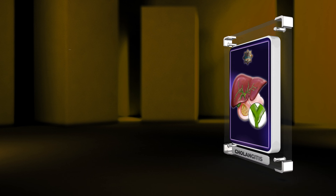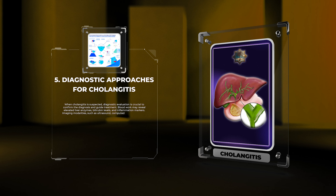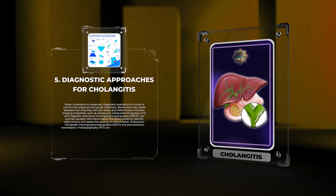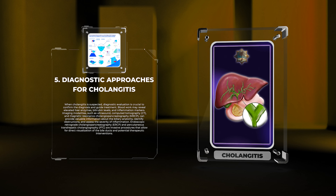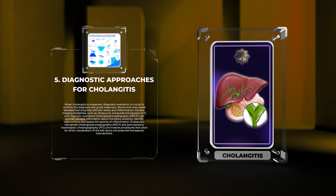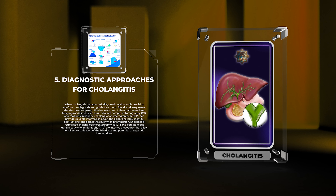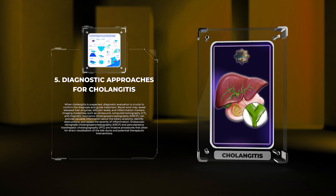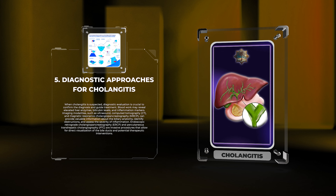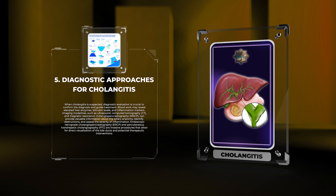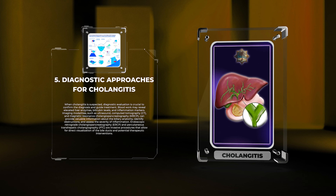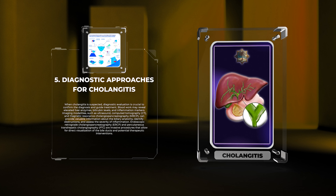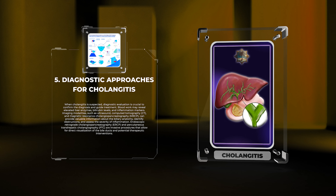When cholangitis is suspected, diagnostic evaluation is crucial to confirm the diagnosis and guide treatment. Blood work may reveal elevated liver enzymes, bilirubin levels, and inflammation markers. Imaging modalities such as ultrasound, computed tomography (CT), and magnetic resonance cholangiopancreatography (MRCP) can provide valuable information about the biliary anatomy, identify obstructions, and assess the severity of inflammation.